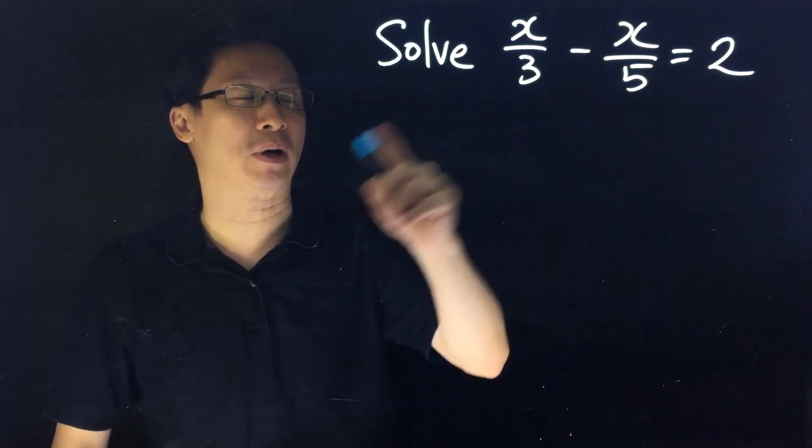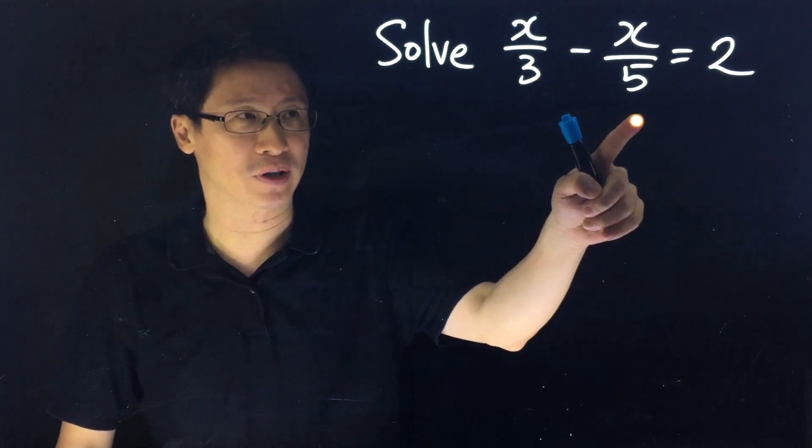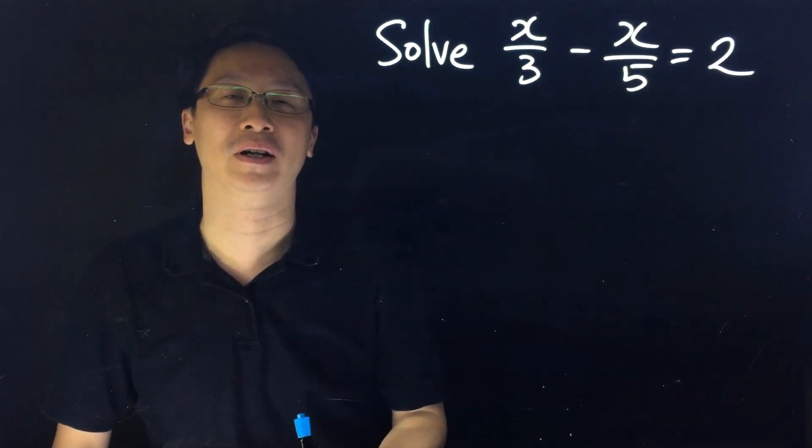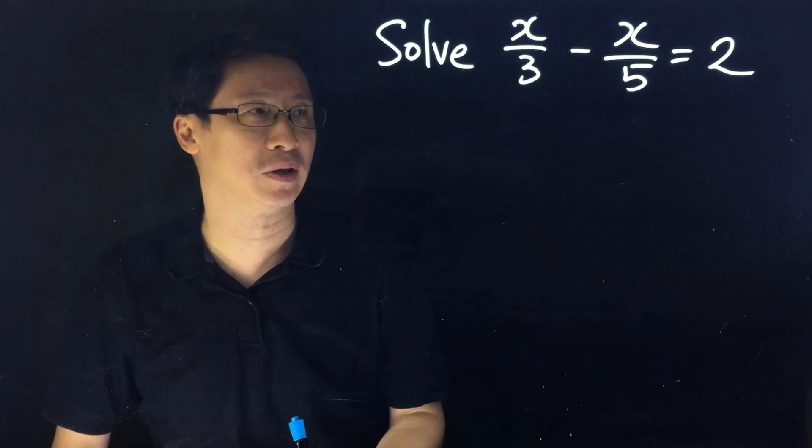In this equation we have fractions, and 3 and 5 are the denominators of the fractions.